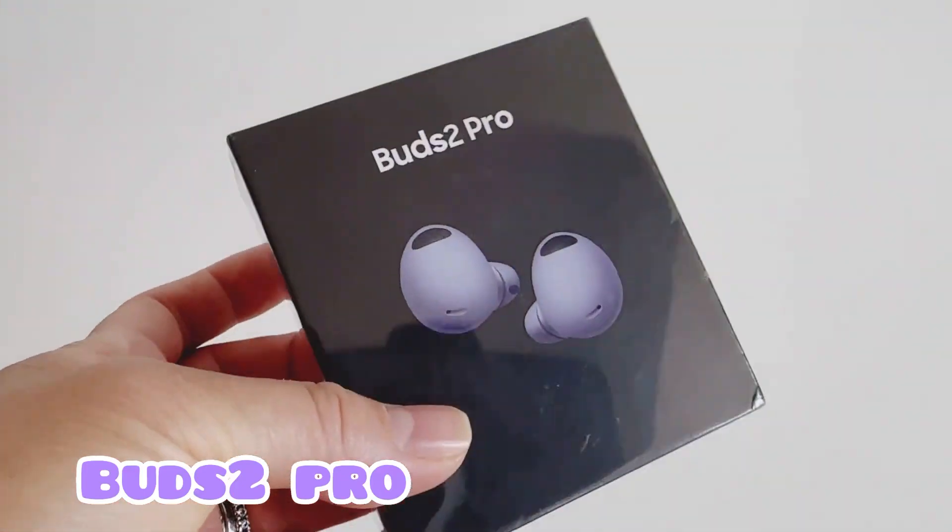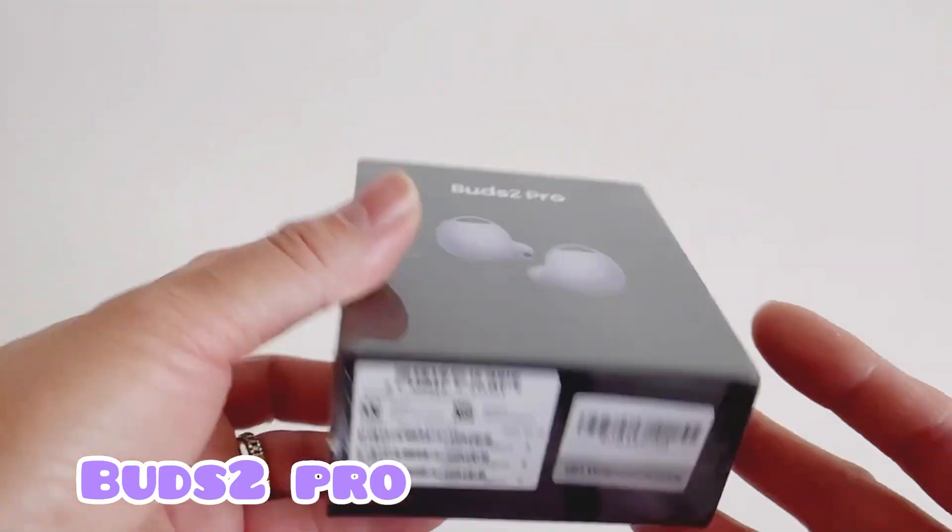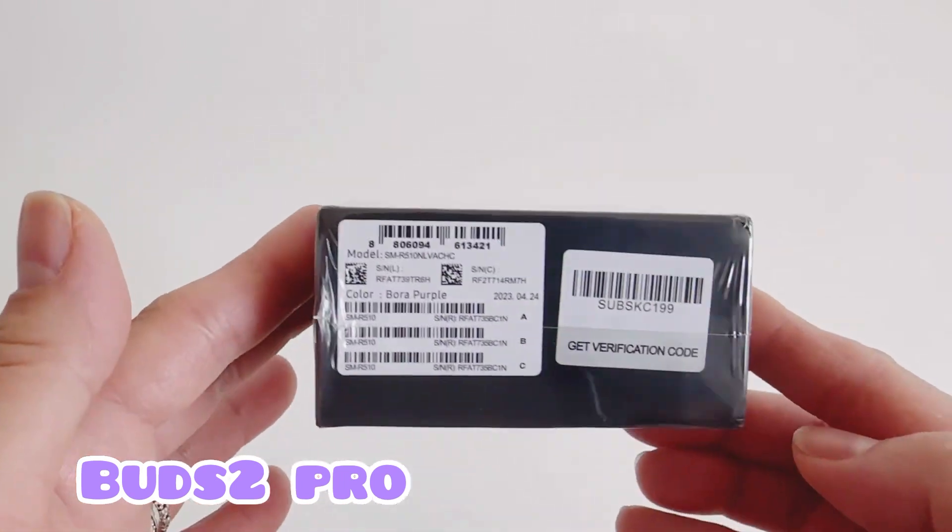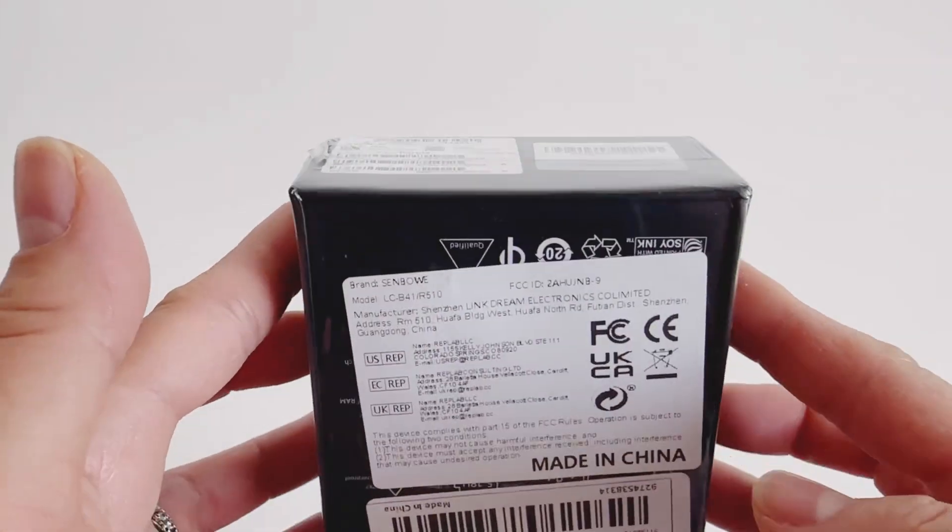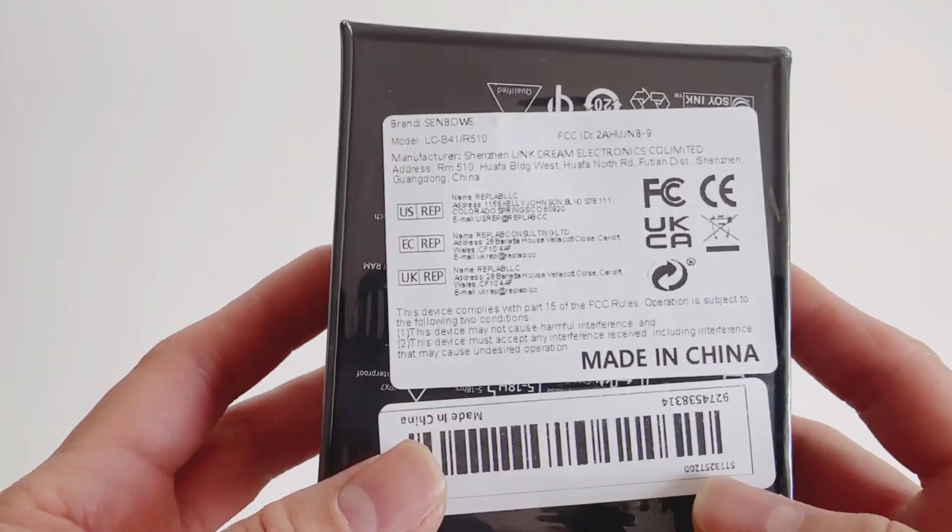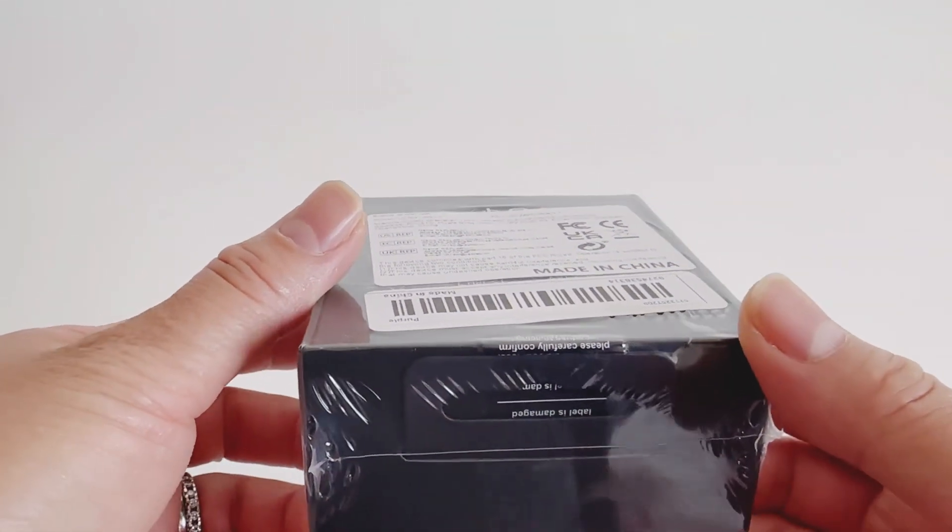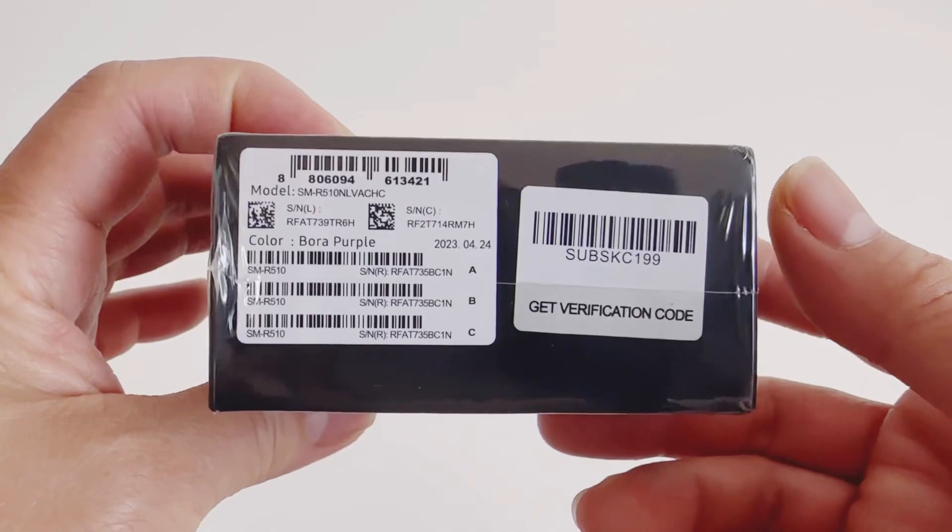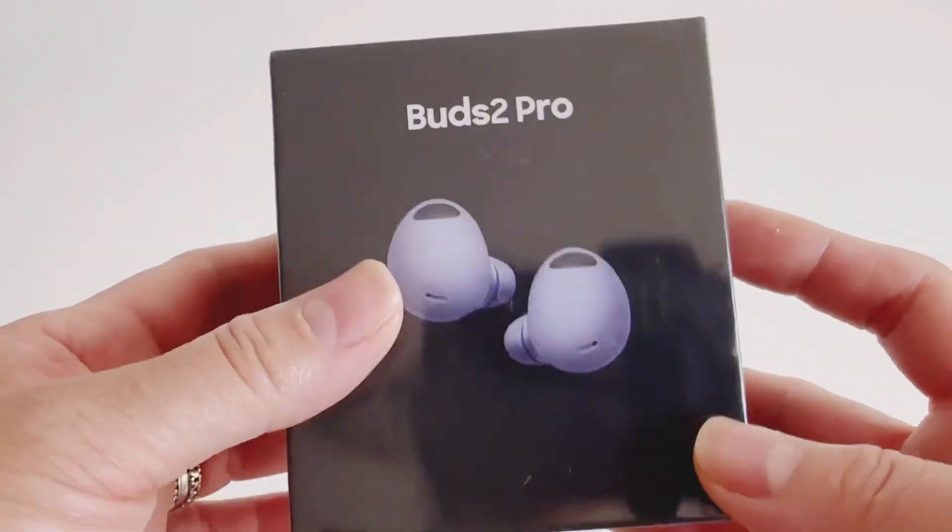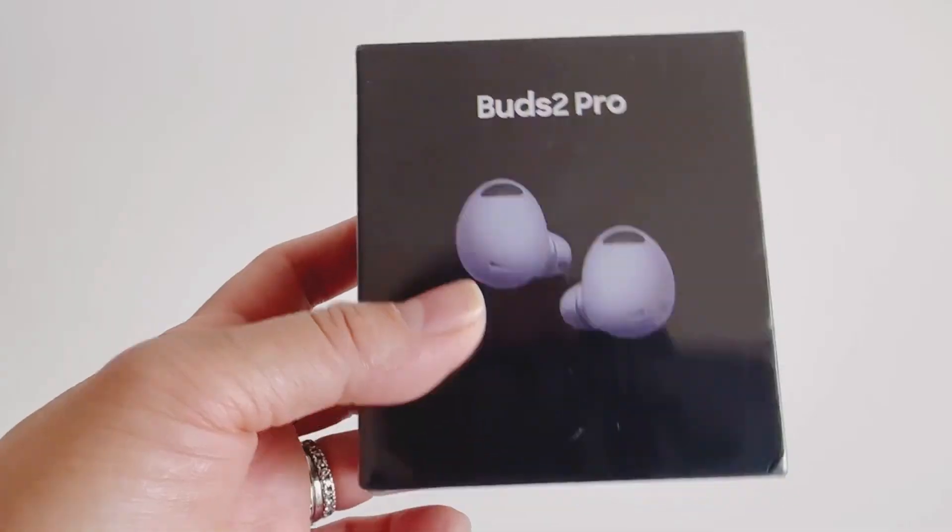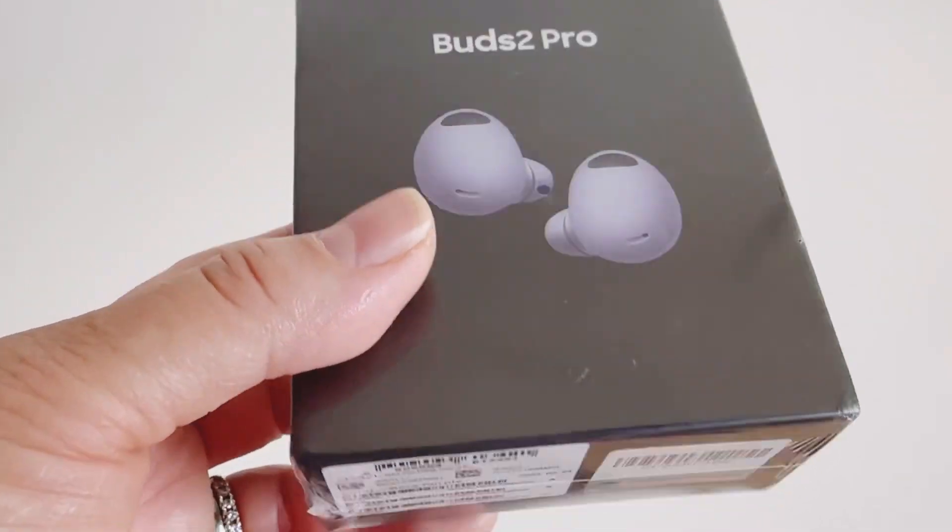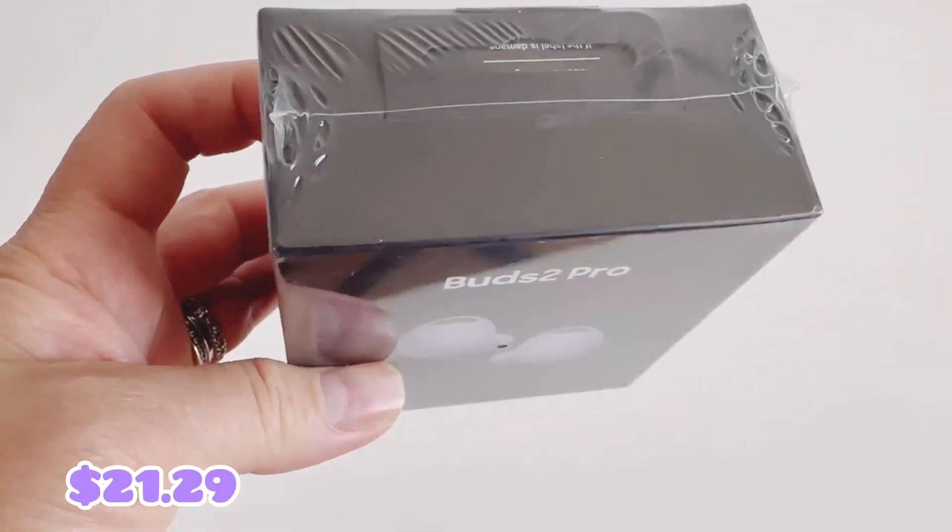Hey guys, welcome back to my channel, it's Daisy here. For today's video I will unbox this Buds Pro. It's like an imitation, I think it looks like an imitation of Samsung, but I found it's very nice and has long battery life. I bought it at Temu, it's about $21.29.